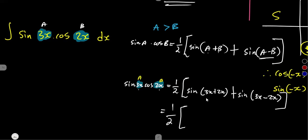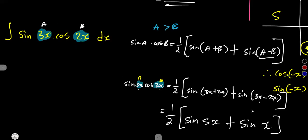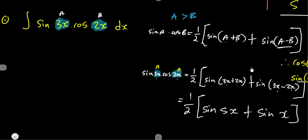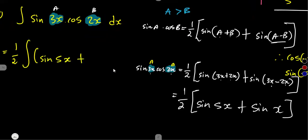This product has now been changed to a sum, which can be integrated because we can see the standard integrals. So the integral equals one-half times the integral of sine(5x) plus sine(x) with respect to x. We take the constant one-half outside of the integral and integrate each term using the standard integral of sine(ax), which gives negative cosine(ax) over a.